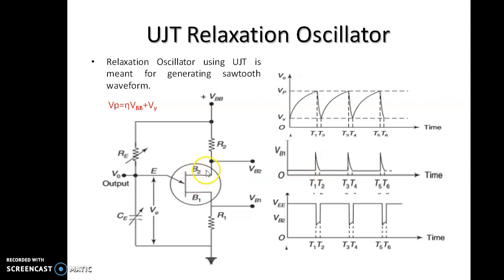At the same time, when it turns on, the drop of VEB1 produces negative going spikes across R2. This is the waveform taken across VB1, this is the waveform taken across VB2, and this waveform is taken across the capacitor CE.